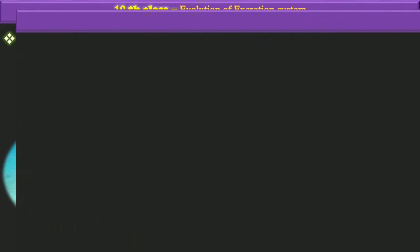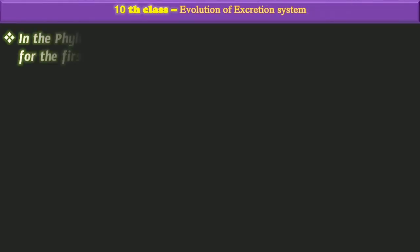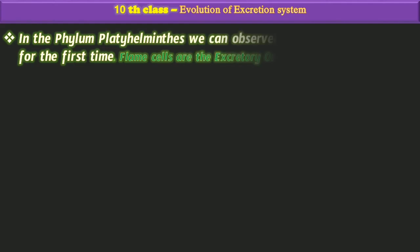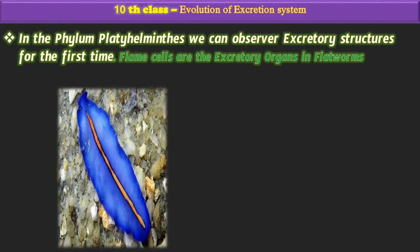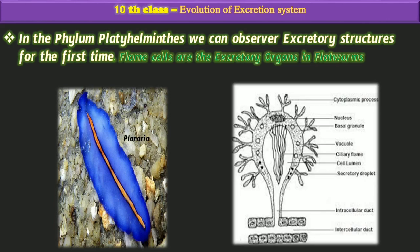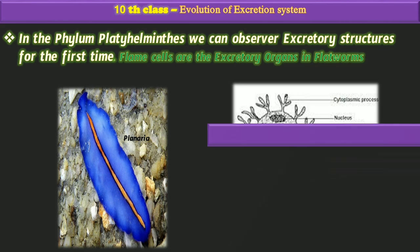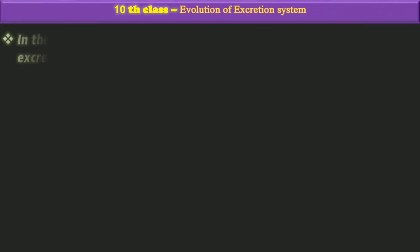In the phylum Platyhelminthes, we can observe excretory organs for the first time. In this phylum, the flame cells are the excretory organs. For example, planaria. These are the flame cells, which are the excretory organs in Platyhelminthes.